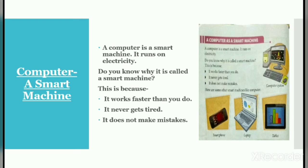Computer — a smart machine. A computer is a smart machine; it runs on electricity. Do you know why it is called a smart machine? This is because it works faster than you do, it never gets tired, and it does not make mistakes.